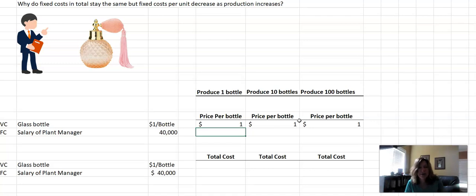If the plant manufactures one bottle, we would say that his salary per bottle is $40,000. If they produce 10 bottles, we would say that his salary per unit, 10 units, so divide by 10, would be $4,000.